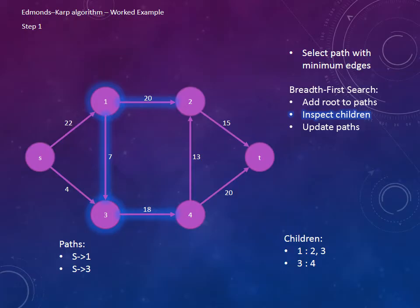Now we need to inspect the children of the ends of the paths that we currently have. So the children of 1 is 2 and 3, and the children of 3 is just 4.